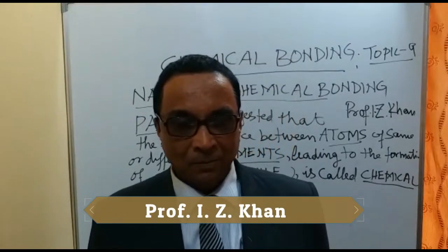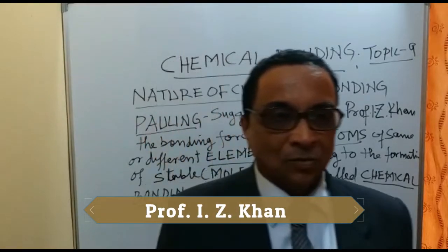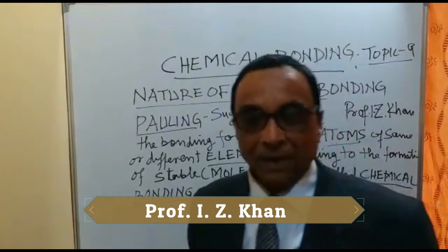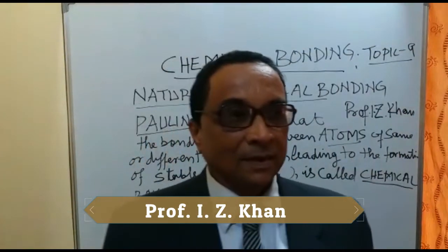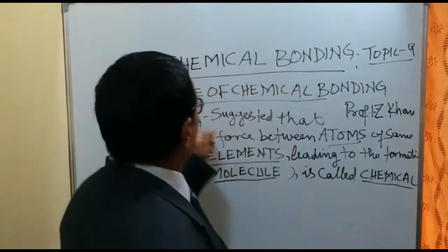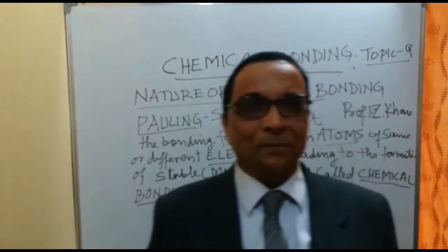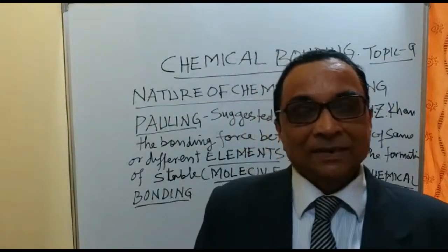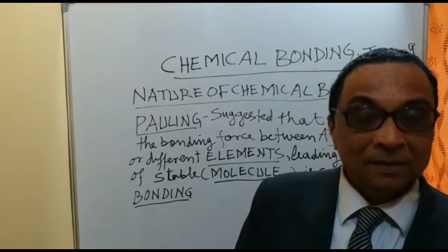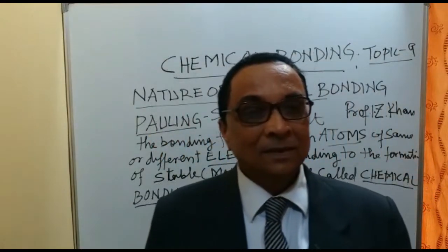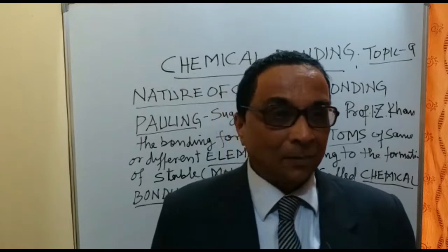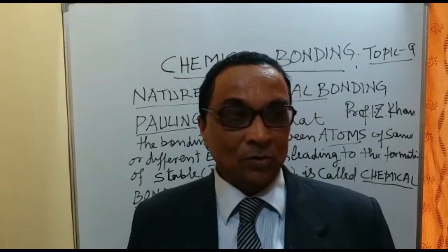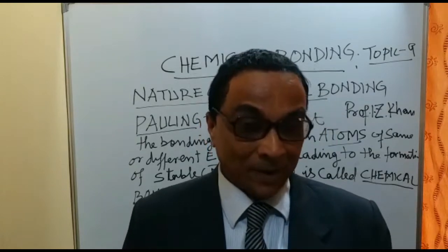Hello everyone, I am Professor I.Z. Khan. Today is the ninth topic and that topic is chemical bonding. There are different types of bonding: one is called ionic bonding, that is electrovalent bonding; the second one is covalent bonding; the third one is coordinate bonding; the fourth one is hydrogen bonding; and of course sigma and pi bonding.